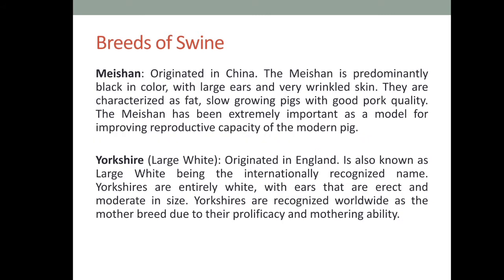Some modern breeds were developed from breeds which originated from China. The Meishan is predominantly black in color with large ears and very wrinkled skin. They are characterized as fat, slow-growing pigs with good pork quality. The Meishan has been extremely important as a model for improving the reproductive capacity of modern pigs. Yorkshire, also known as Large White, originated in England. Large Whites or Yorkshires are entirely white with erect and moderately sized ears. They are very good in prolificacy and mothering ability.